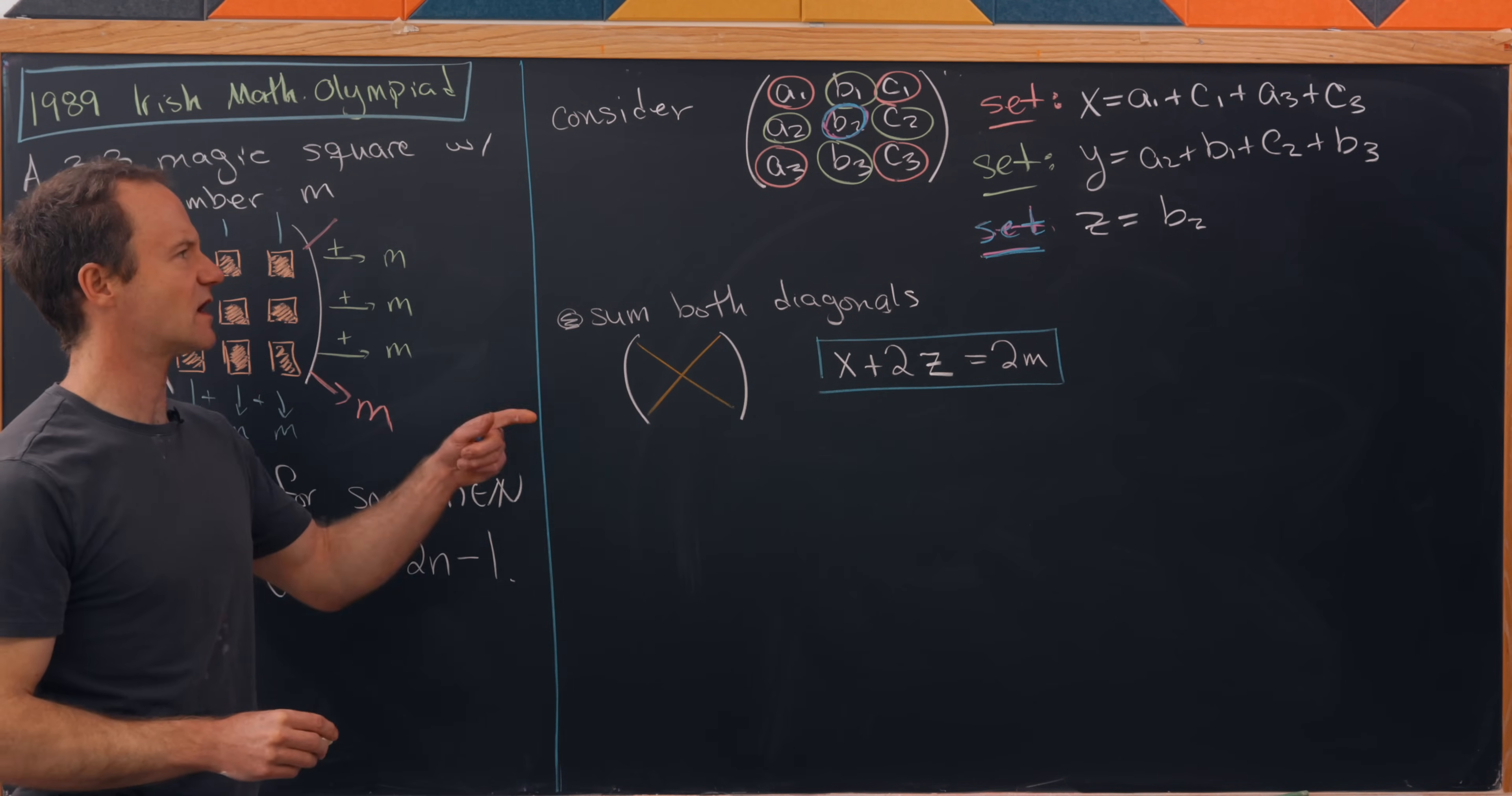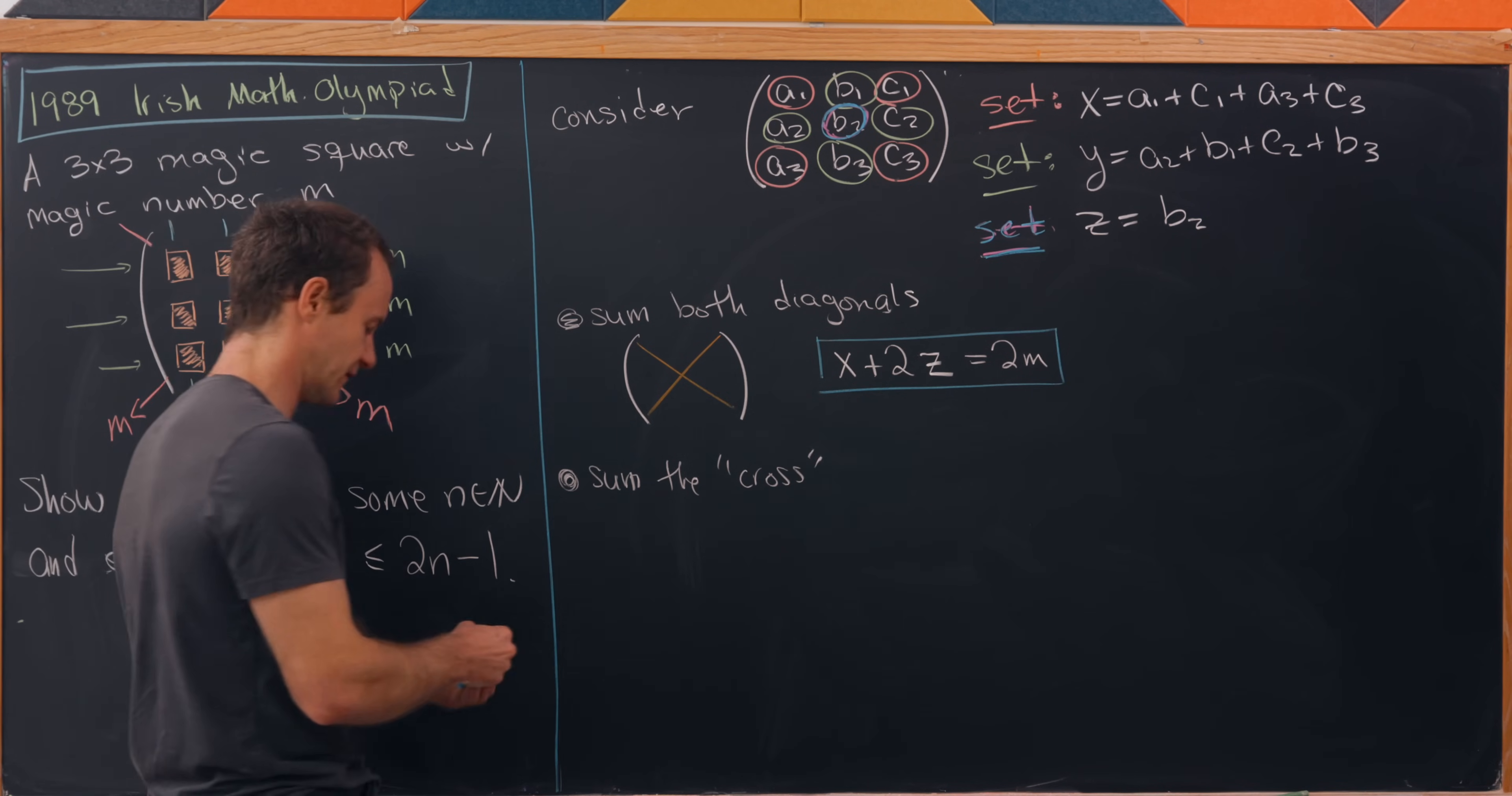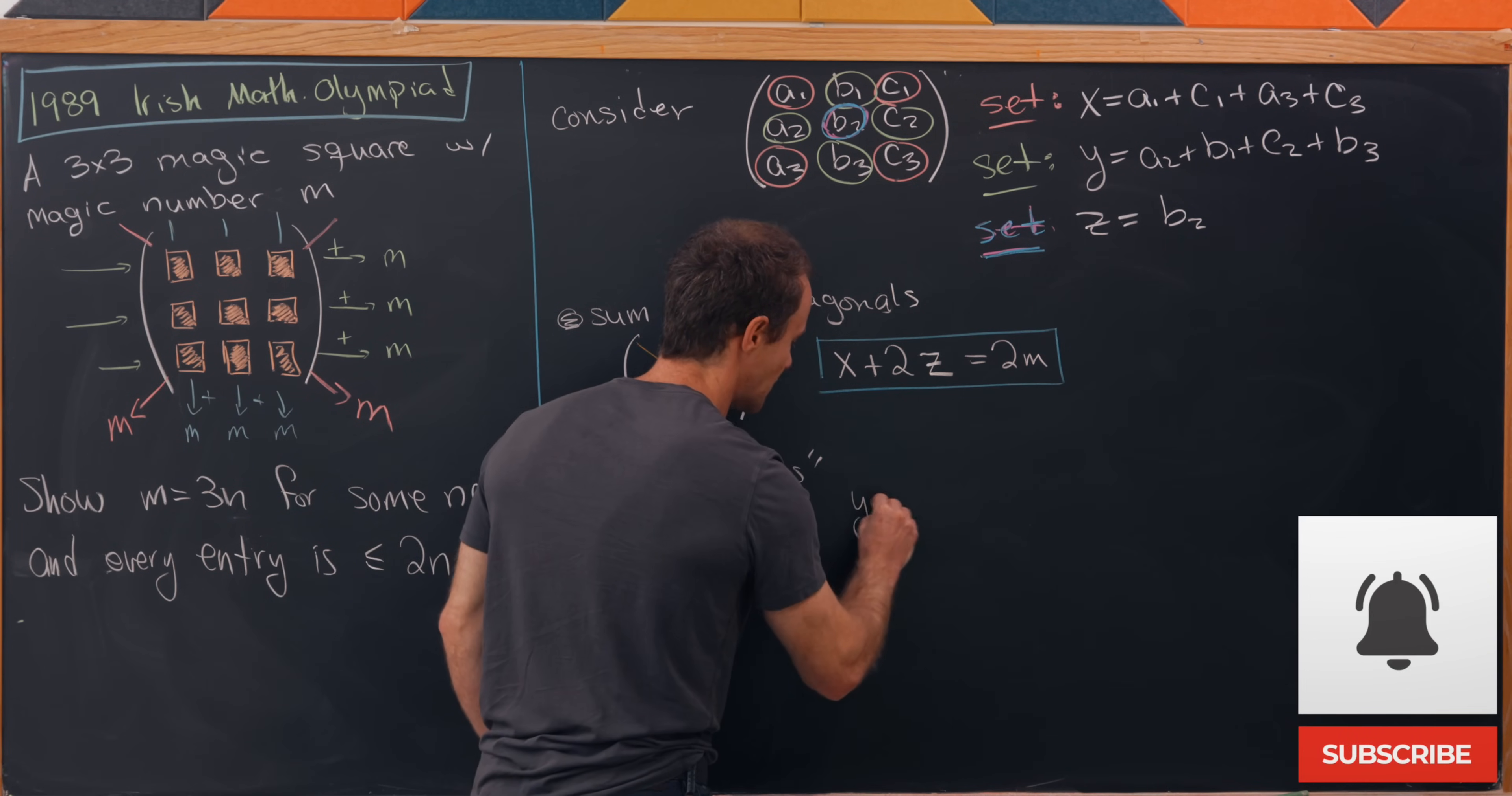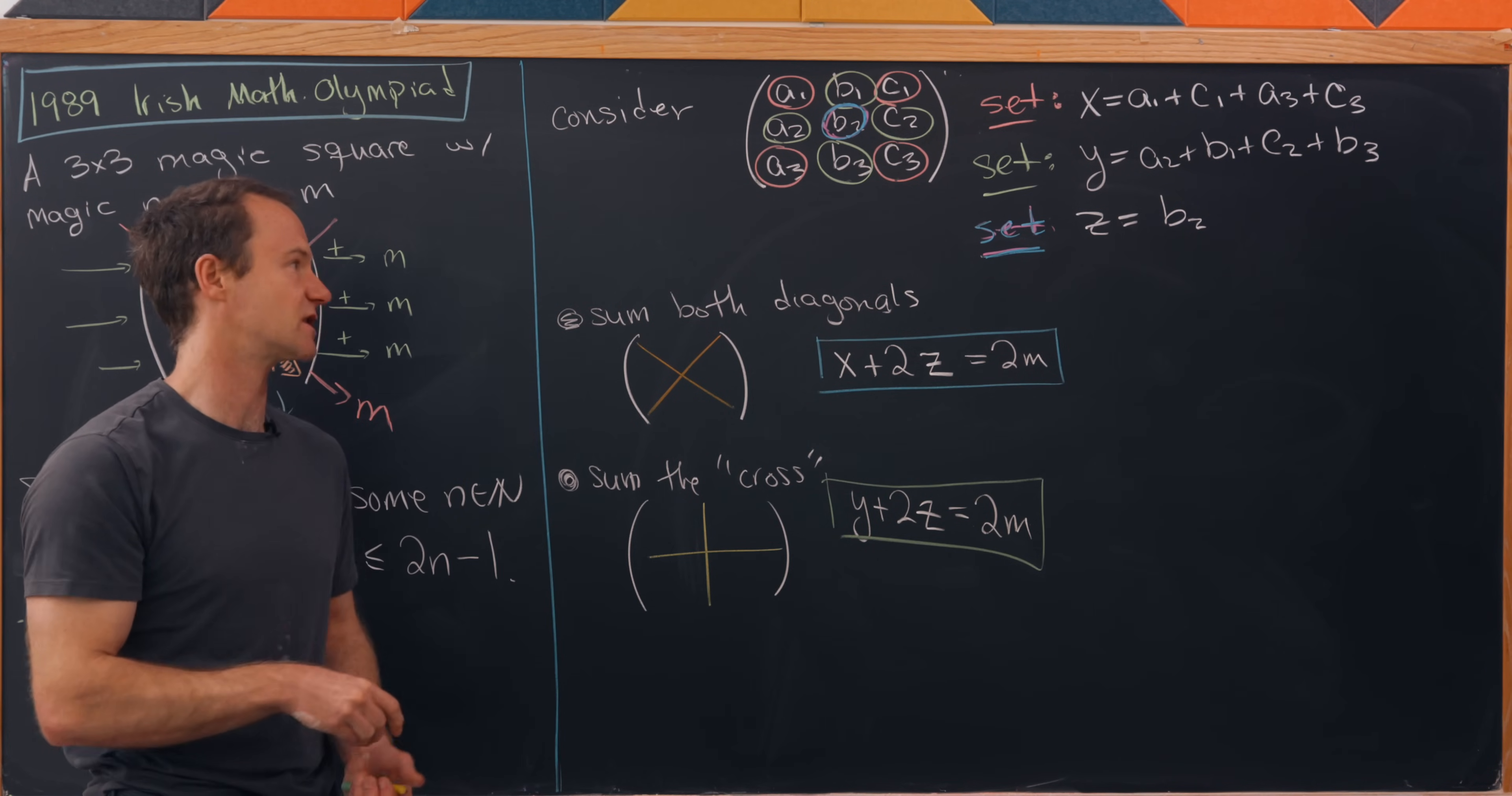Next up, we want to somehow use our row sum or our column sum, and we'll do that by summing what I'll call the cross. What I mean by that is the middle column as well as the middle row. That will give us y plus 2z, because we hit all of these midpoint objects and we go through the center twice. So we have y plus 2z, and that is 2 times m because we summed a row and a column.